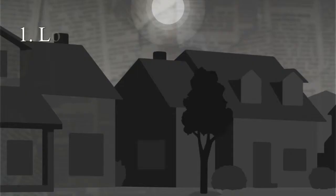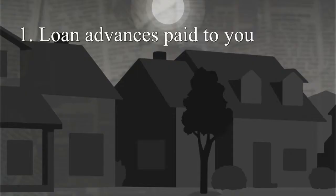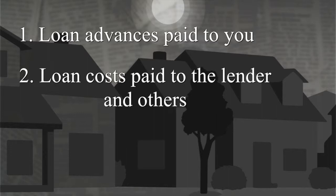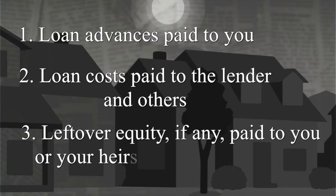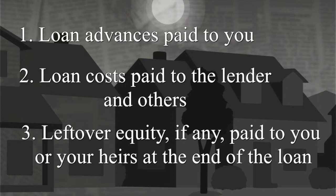Here's a simple way to think about reverse mortgages. All reverse mortgages turn your home equity into three things: one, loan advances paid to you; two, loan costs paid to the lender and others; and three, leftover equity — if any — paid to you or your heirs at the end of the loan.